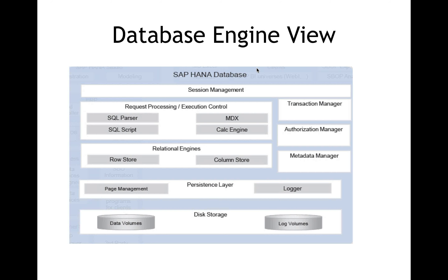Today we are going to talk about five areas: database, loading capability, modeling, reporting, and administration. This screen shows a snapshot of the database engine view, with components such as disk storage and the persistence layer. I'm going to break this down into smaller parts to explain things better.